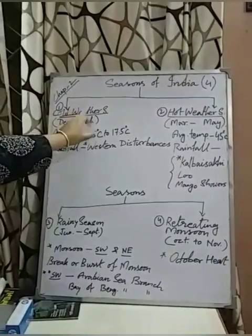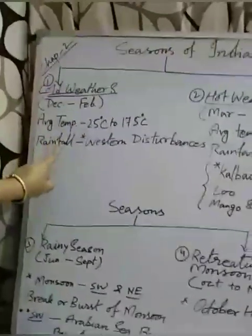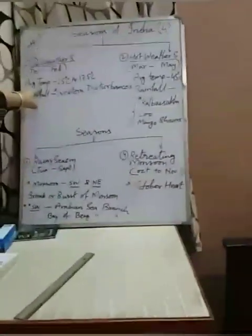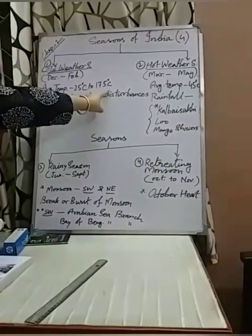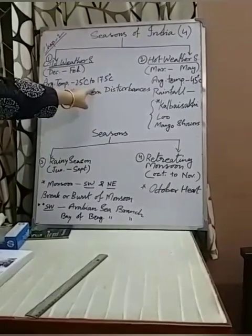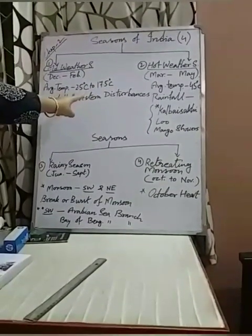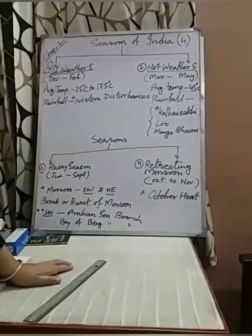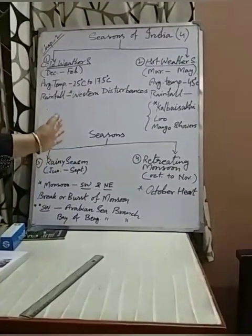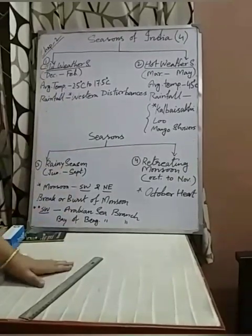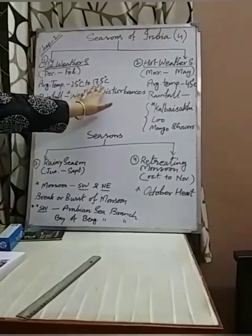Cold weather season: the duration of this season is from December to February. Average temperature varies from 2.5 degrees centigrade to 17.5 degrees centigrade throughout most of the country. But in the Himalayas area, temperature goes below 0 degrees. Some coastal parts of India are neither too hot nor too cold because of the distance from the sea effect, with a maximum temperature of 21 degrees centigrade during this period.